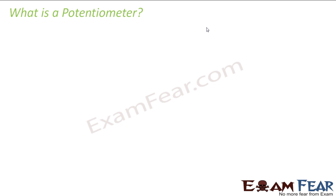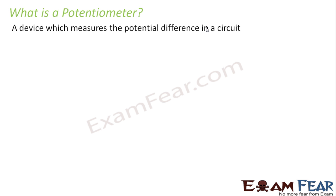So let us first see what a potentiometer is and what exactly it is going to do — how is it going to help us? It is a device which measures the potential difference in a circuit. The name itself gives us a hint: from the word 'potential difference,' it has got the name potentiometer. So it will measure the potential difference in a circuit.